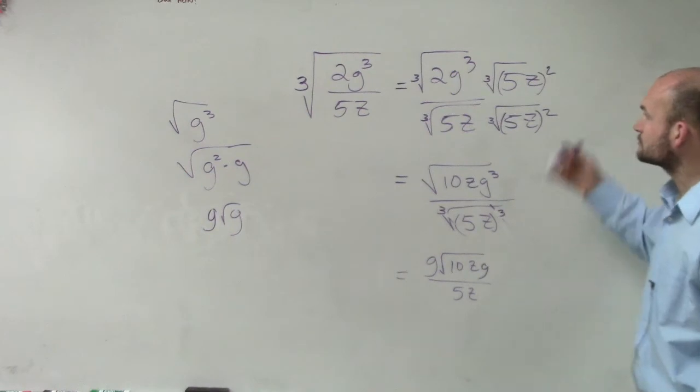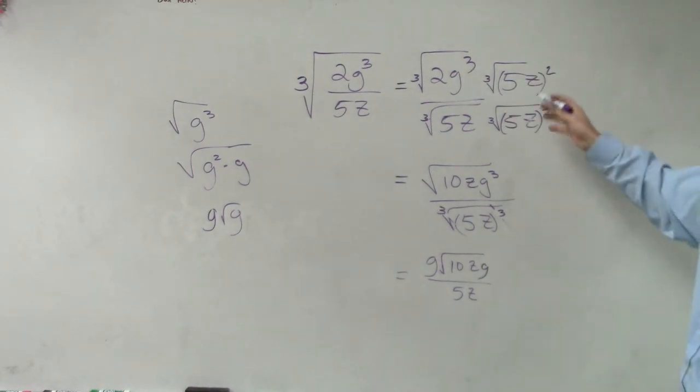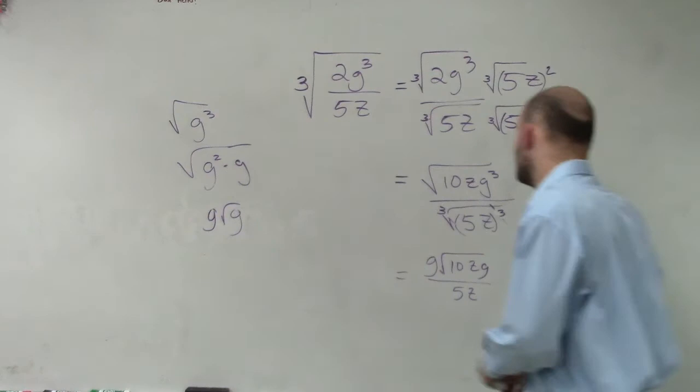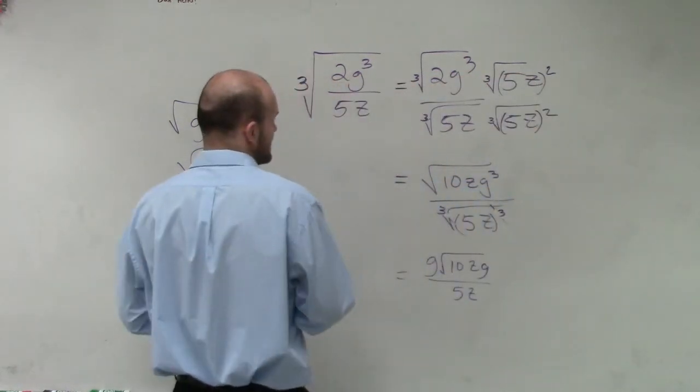So then you would multiply this across. So really, this is 25. So then my problem would end up being, so when we rationalize the denominator now...